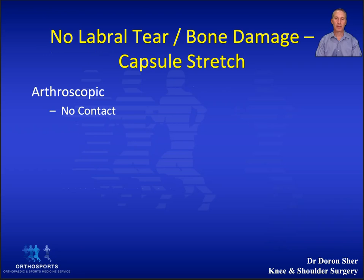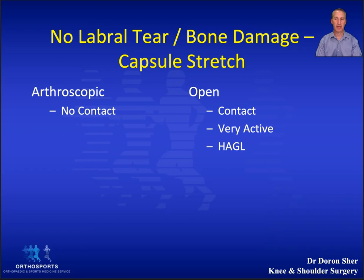What about the patient who has injured their capsule but not their labrum? For the average person an arthroscopic capsular advancement will work very well. But in the contact athlete where a 50% reduction in capsule volume is needed — compared to the 30% achievable arthroscopically — then an open capsular shift is best.